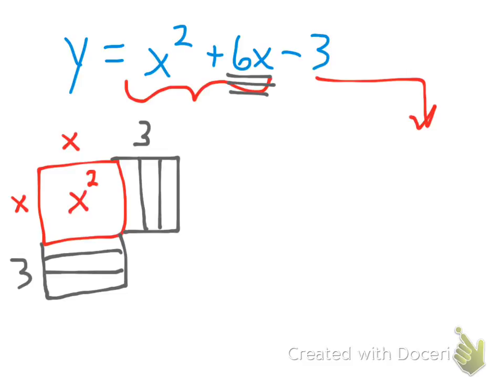So now my square that I am creating is going to be an x square or x plus 3 square. So as we can see here though, I need to actually complete the square. So how many do I need to complete my square? Well, 3 times 3 is a positive 9.